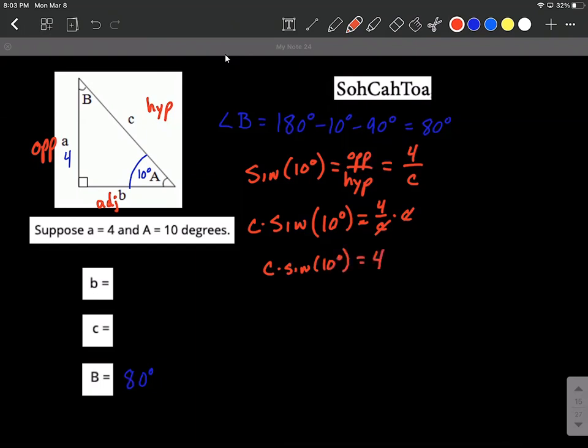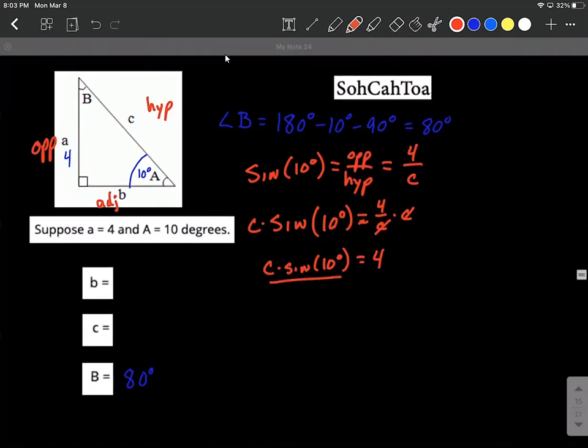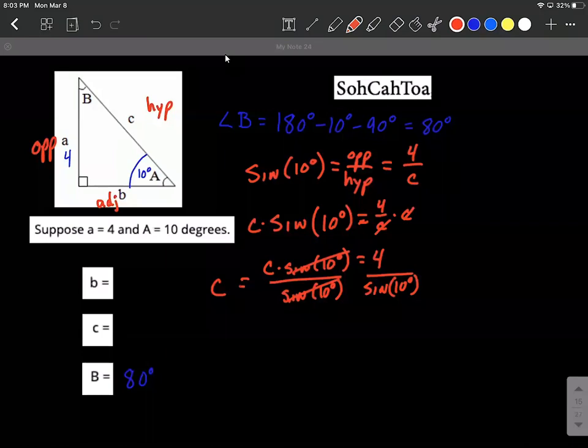And to get C all by itself, it's multiplied by sine of 10 degrees, so we'll divide both sides by sine of 10 degrees. Therefore, those get to cancel out and we get C all by itself over here. So there's our answer for C is going to be 4 divided by sine of 10 degrees. Now if you wanted to get a decimal approximation on this, make sure your calculator is in degree mode as opposed to radian mode.